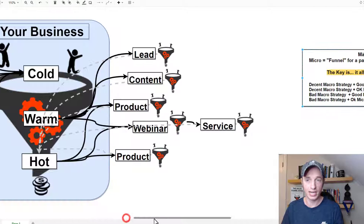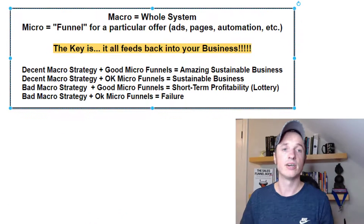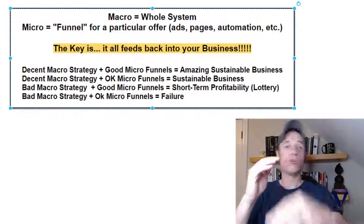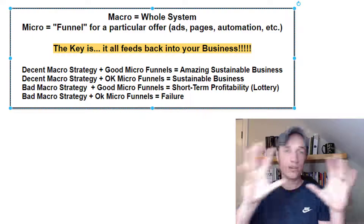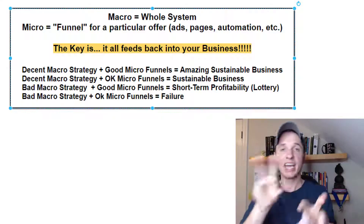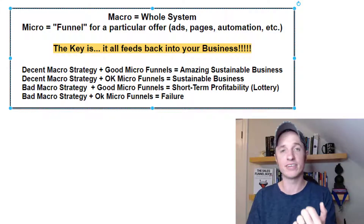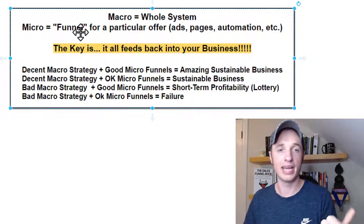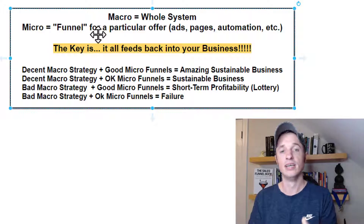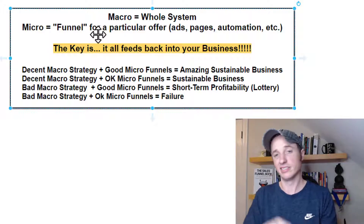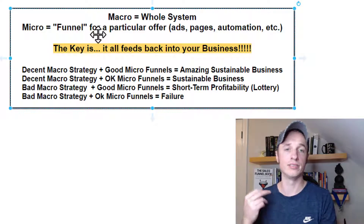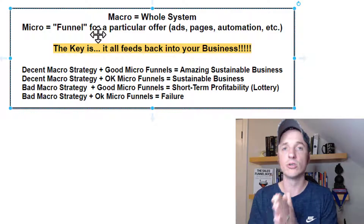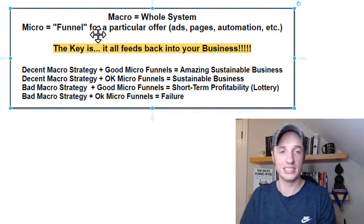So let me move over real quick. The macro is your whole system — your whole business, cold to warm to hot, all your micro sales funnels interconnected with marketing automation, advertisements, and so on. The micro funnels are for particular offers — products, services, and the like — including your ads, your pages, your automations, all trying to sell those individual offers.